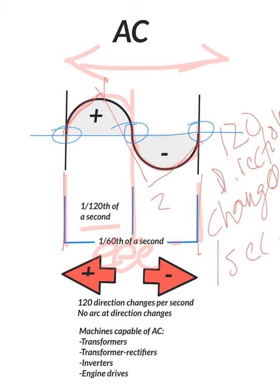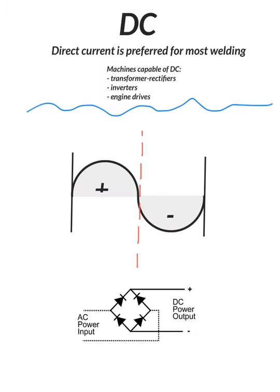DC, direct current, is preferred for most welding. Machines that are capable of DC is anything but that transformer only. So we can transform, but do we have a rectifier? We need some type of rectifier. Here's a bridge rectifier. Here, those are diode symbols, there's four diodes, and all we're really doing is kind of rerouting this power.